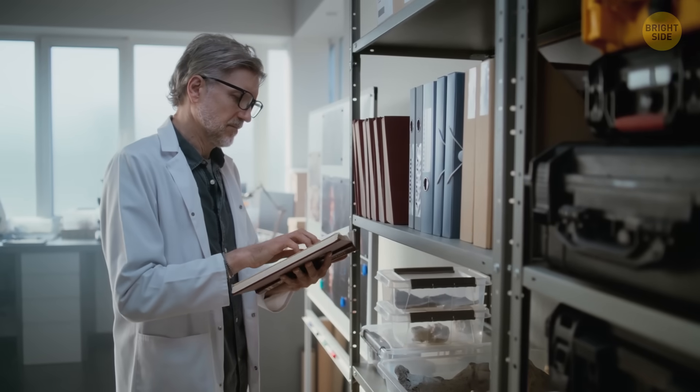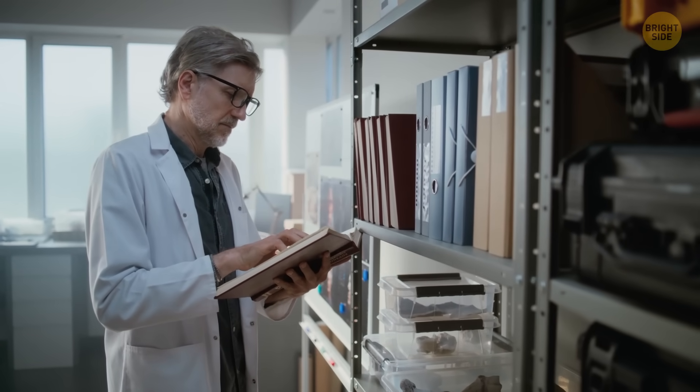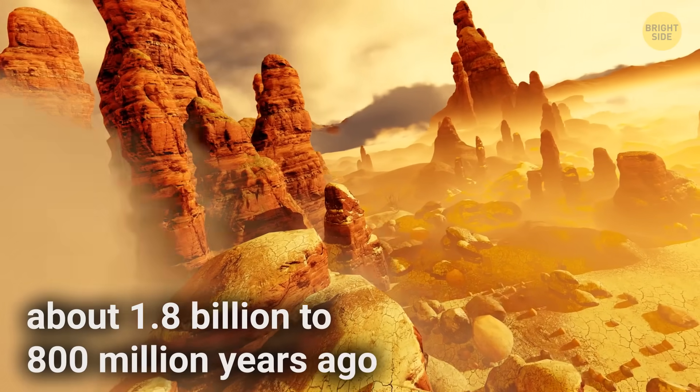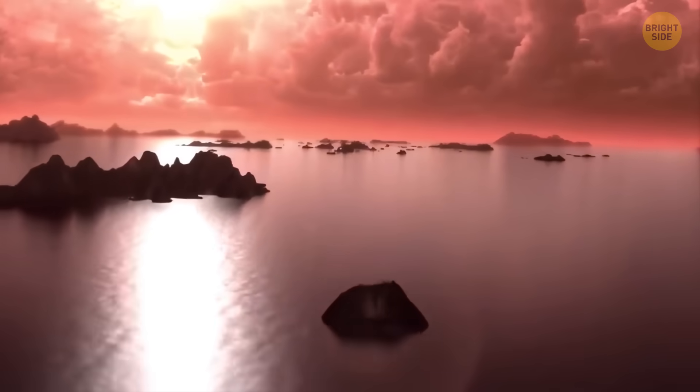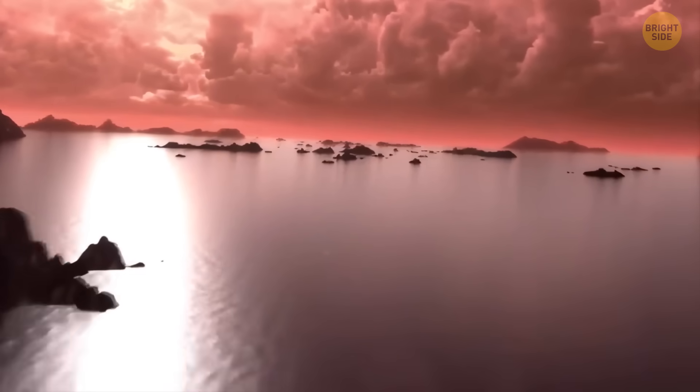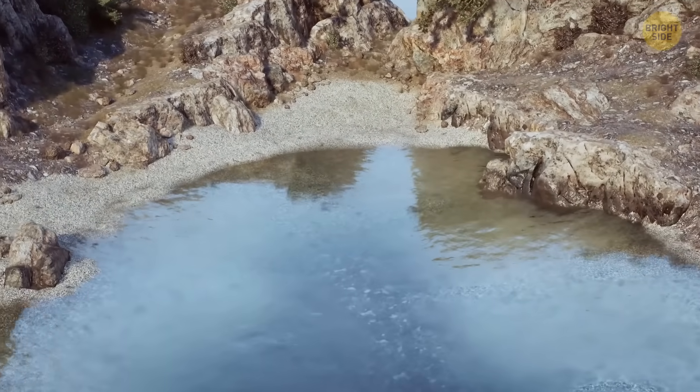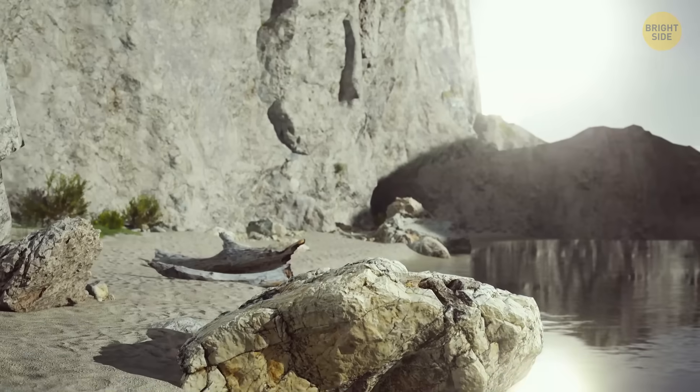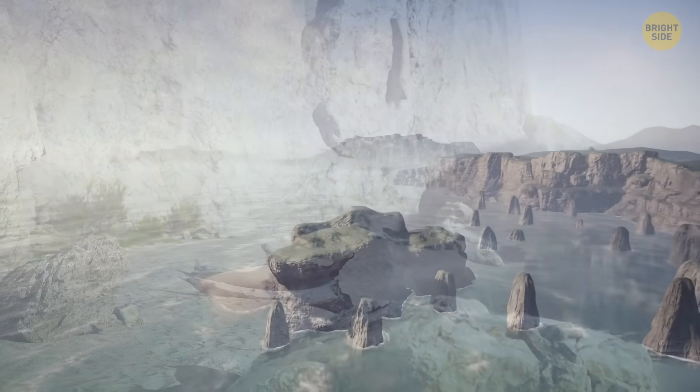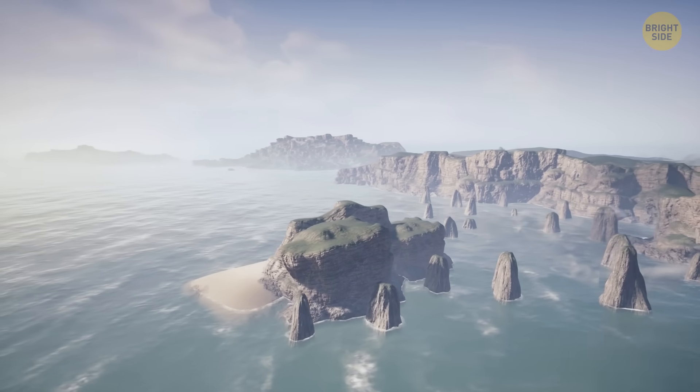Scientists used to call this part of Earth's history the boring billion. It lasted from about 1.8 billion to 800 million years ago. Not much seemed to happen during that time—no big climate changes, no bizarre life forms, and nothing very dramatic. Turns out the name isn't very fair. Things may have looked calm on the surface, but underneath, Earth was changing a lot.